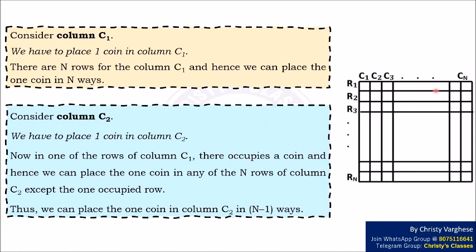Consider column C2. We have to place one coin in column C2. Now, in one of the rows of column C1, there occupies a coin and hence we can place the one coin in any of the N rows of column C2 except the one occupied row. Thus, we can place the one coin in column C2 in N-1 ways.